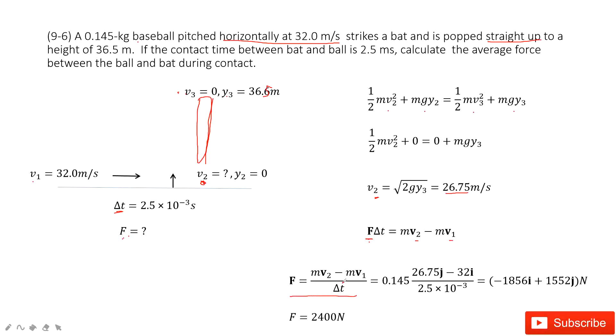So in this one, the force can be written in this equation. So v2, because it tells us it moves straight up, is the j component. And the initial velocity v1 horizontally is the i component. Then we do this calculation, get the final answer.